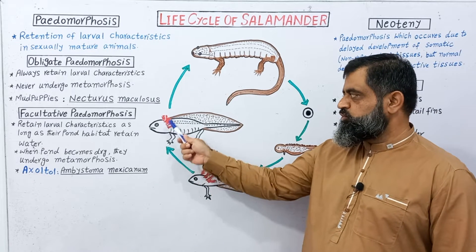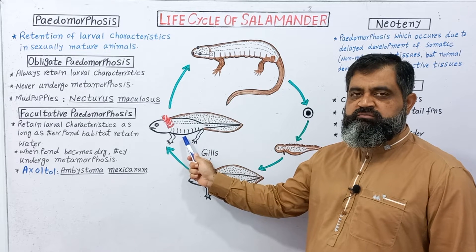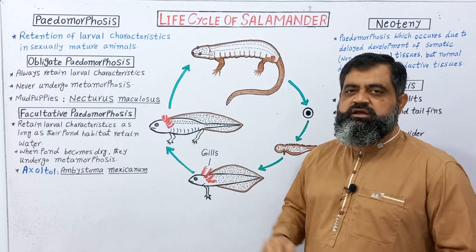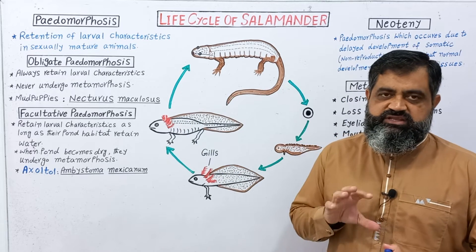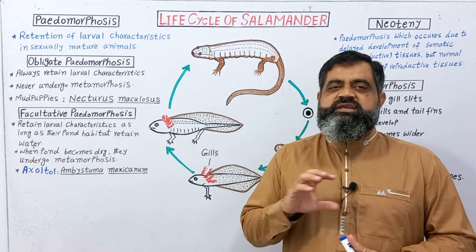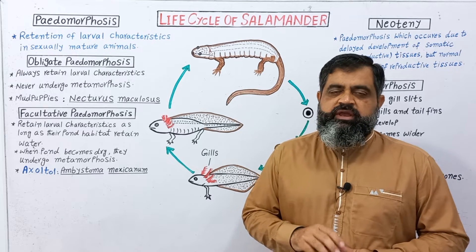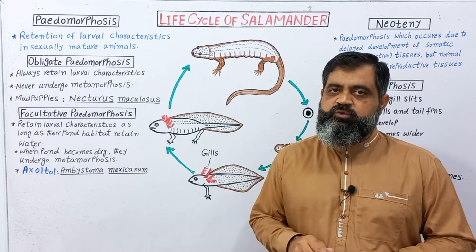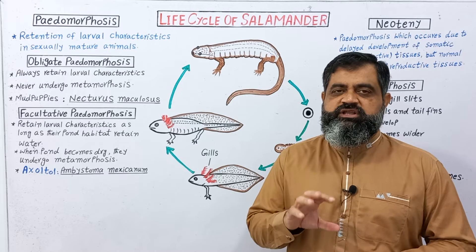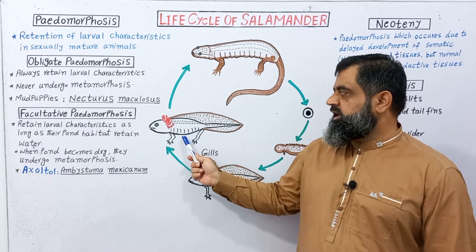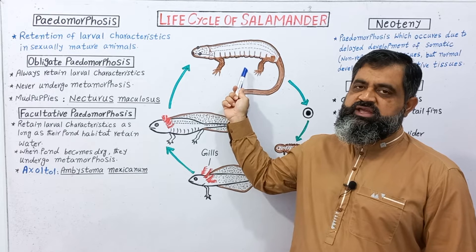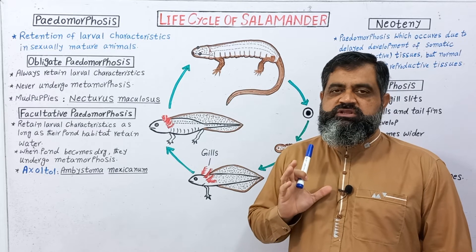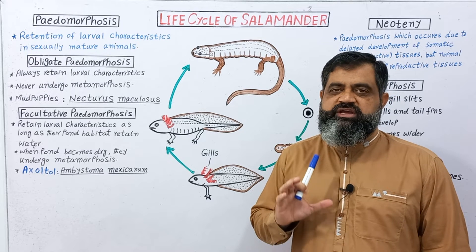The larvae then grows into a larger size with bigger forelimbs, hind limbs, tail fins, and gills. At this stage it can live for many years in the water, feeding on different planktonic species and algae. Later in their life, this larvae can become an adult, which does not have tail fins and also does not have gills. This process is known as metamorphosis.